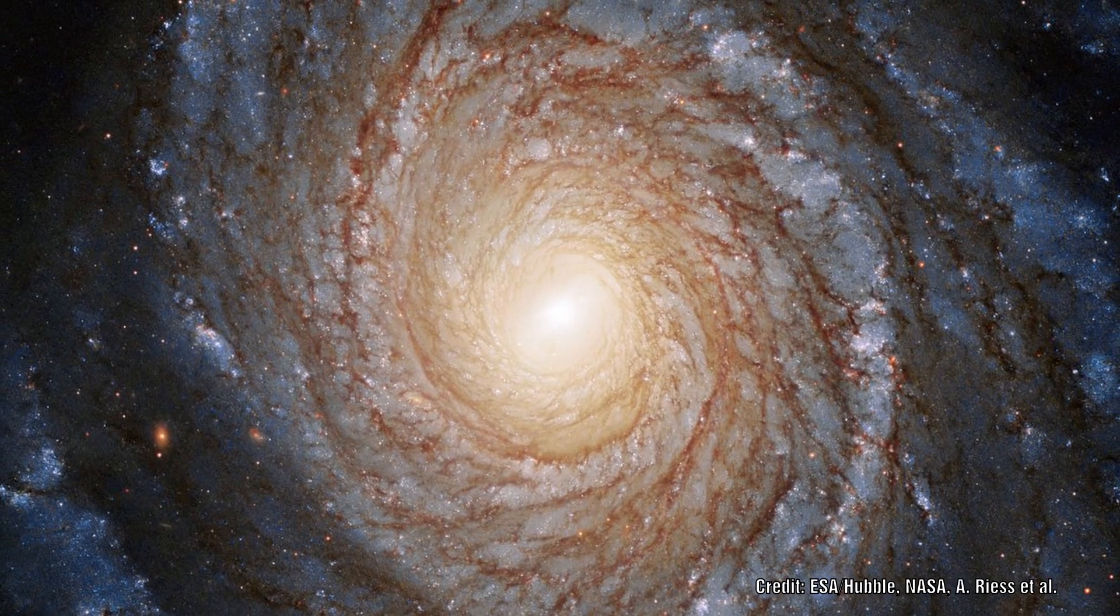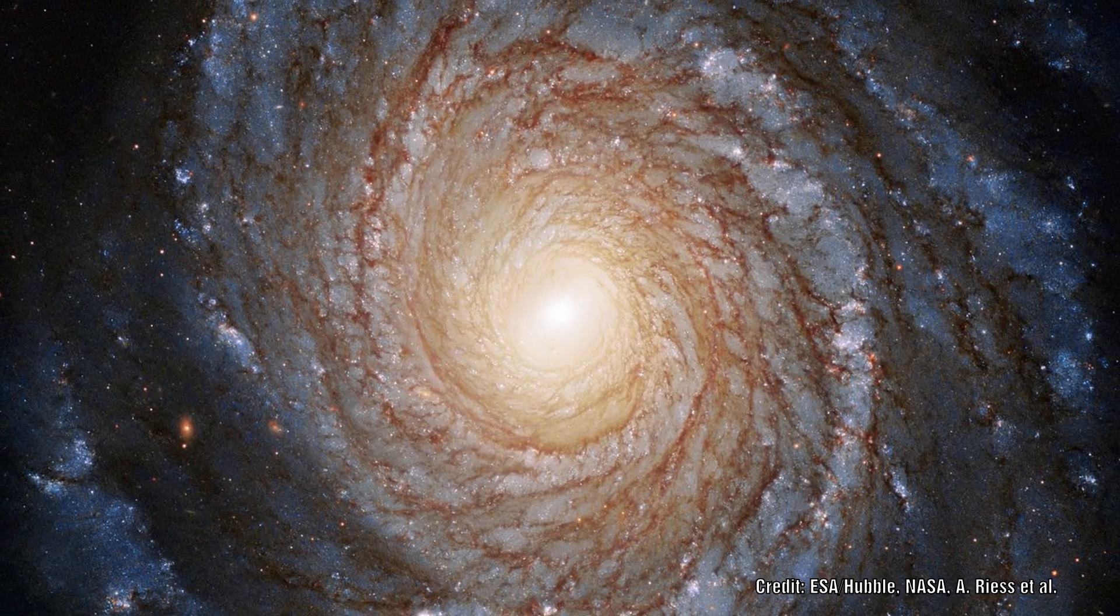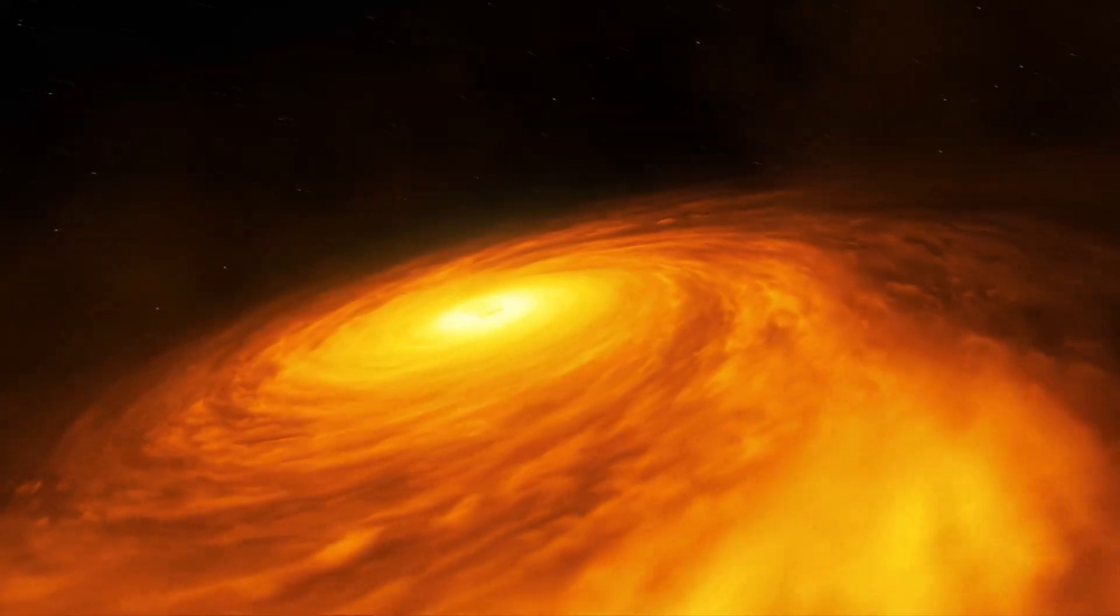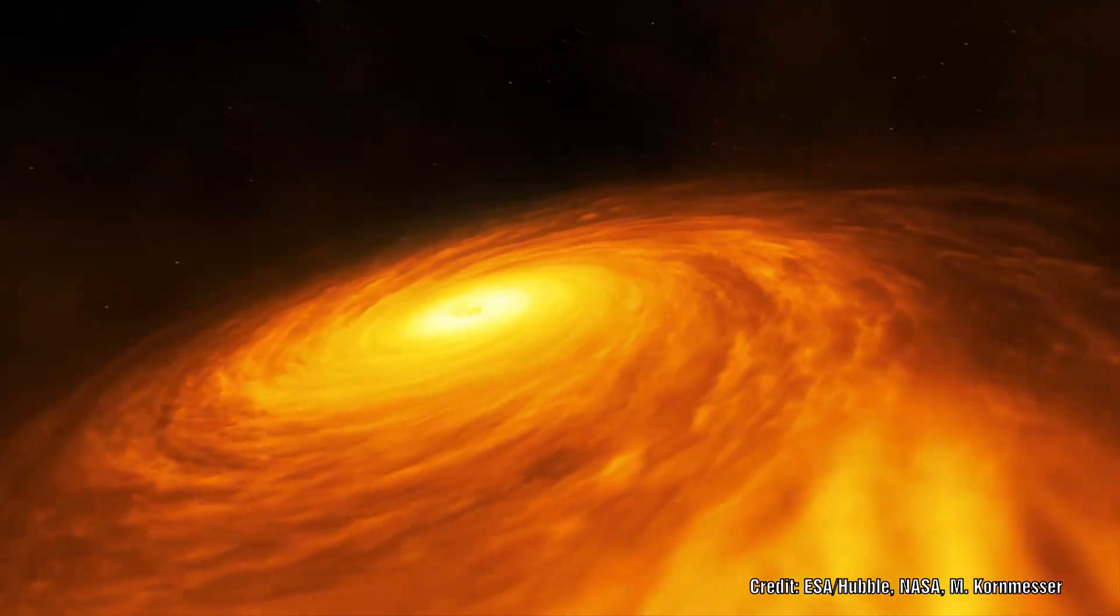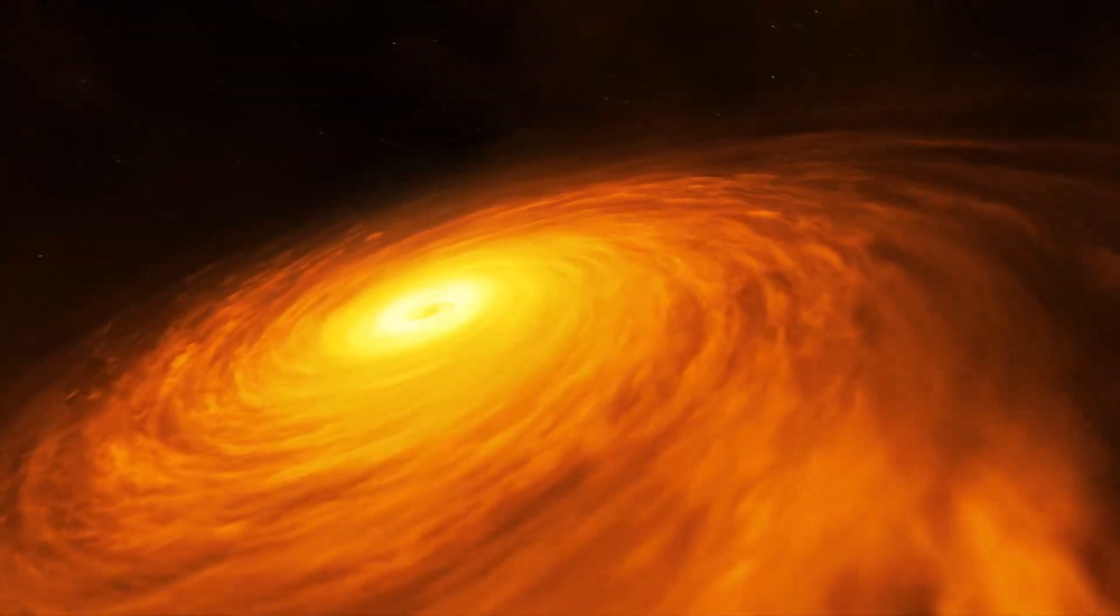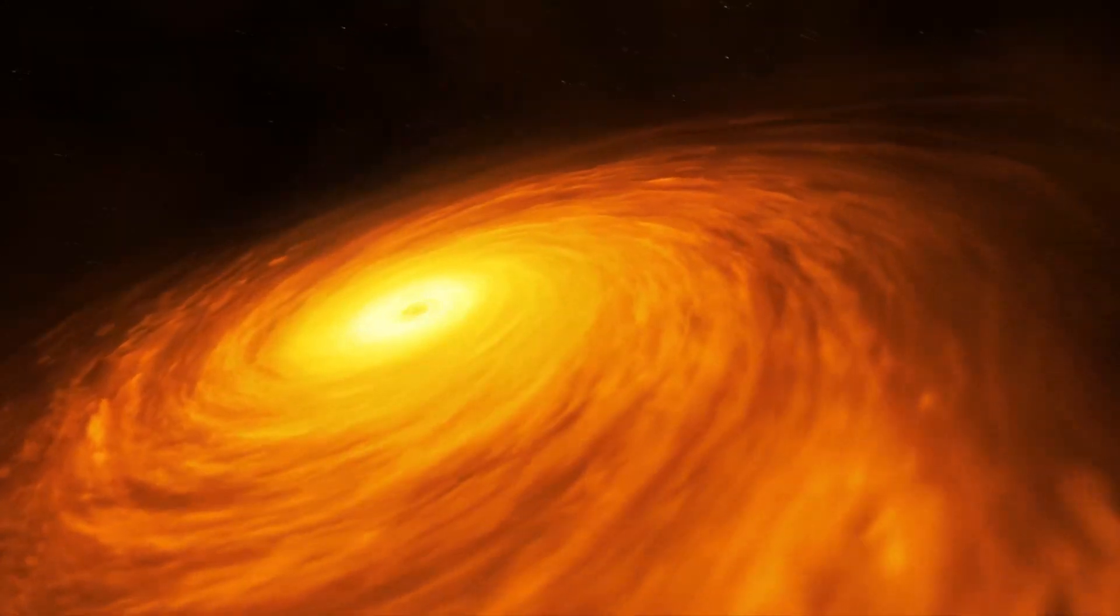At the center of the spiral galaxy NGC 3147 sits what astronomers thought was an inactive black hole. In a recent image taken of this area, astronomers have discovered a structure surrounding this black hole which they thought was impossible.